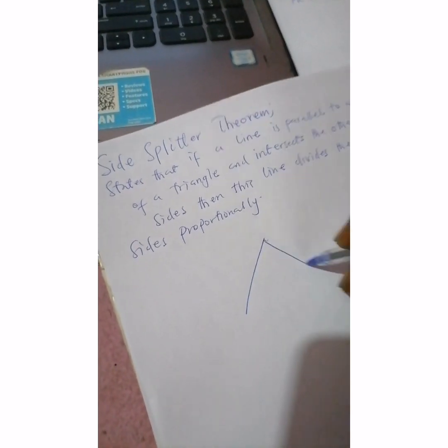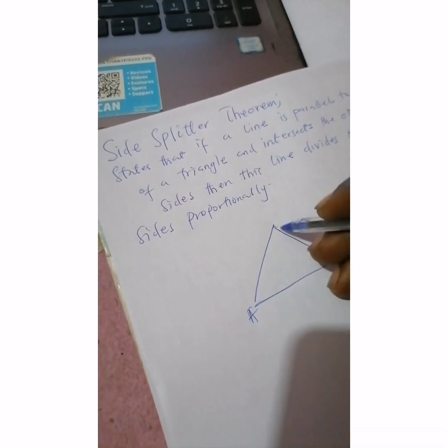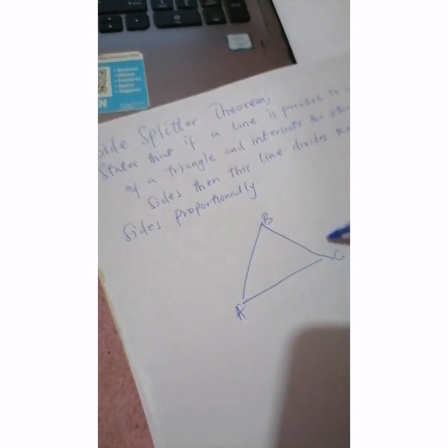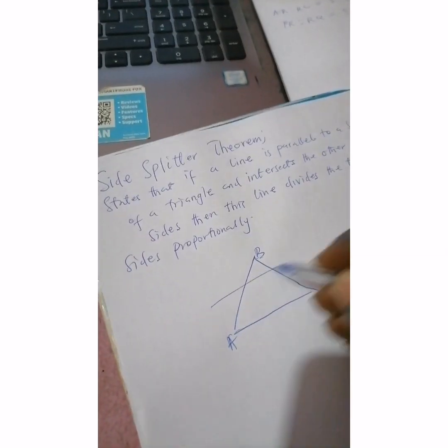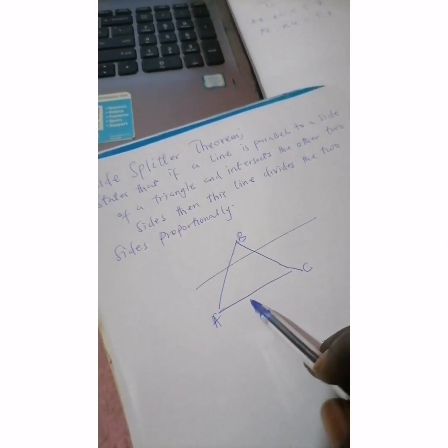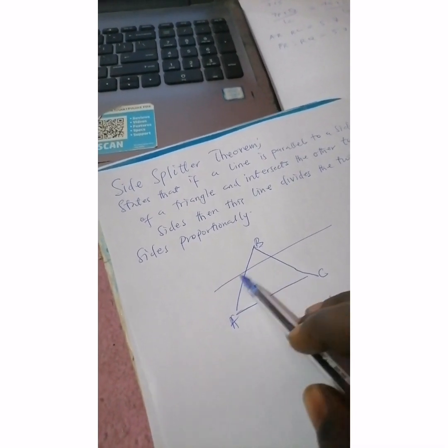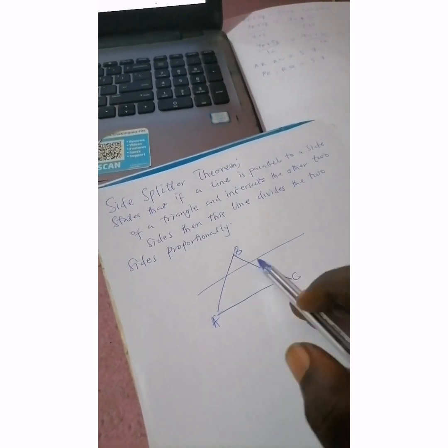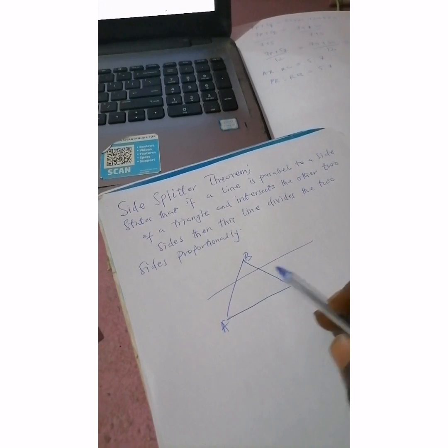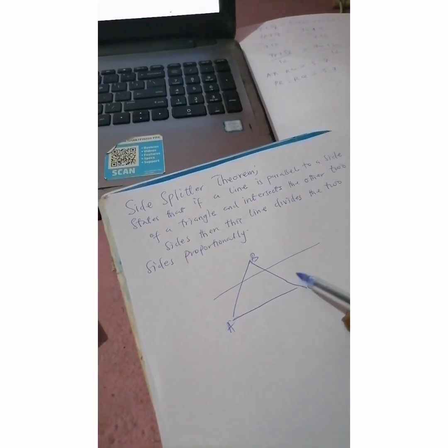To solve this question we need a particular theorem that will help us — we call this the Side Splitter Theorem. The Side Splitter Theorem states that if you have a line which is parallel to a side of a triangle, and that line intersects the other two sides, then it divides those two sides proportionally.